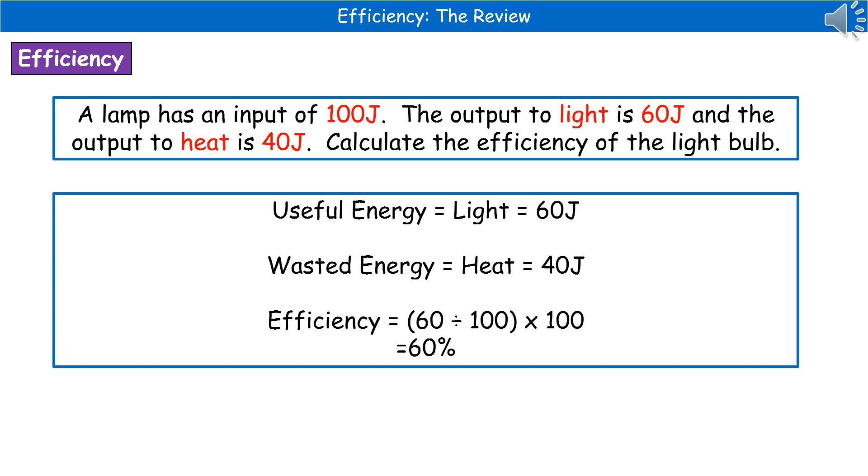Therefore, when we work out the efficiency, which is useful output energy divided by input energy times 100, it's going to be 60 divided by 100, then we times that by 100, which gives us 60%.